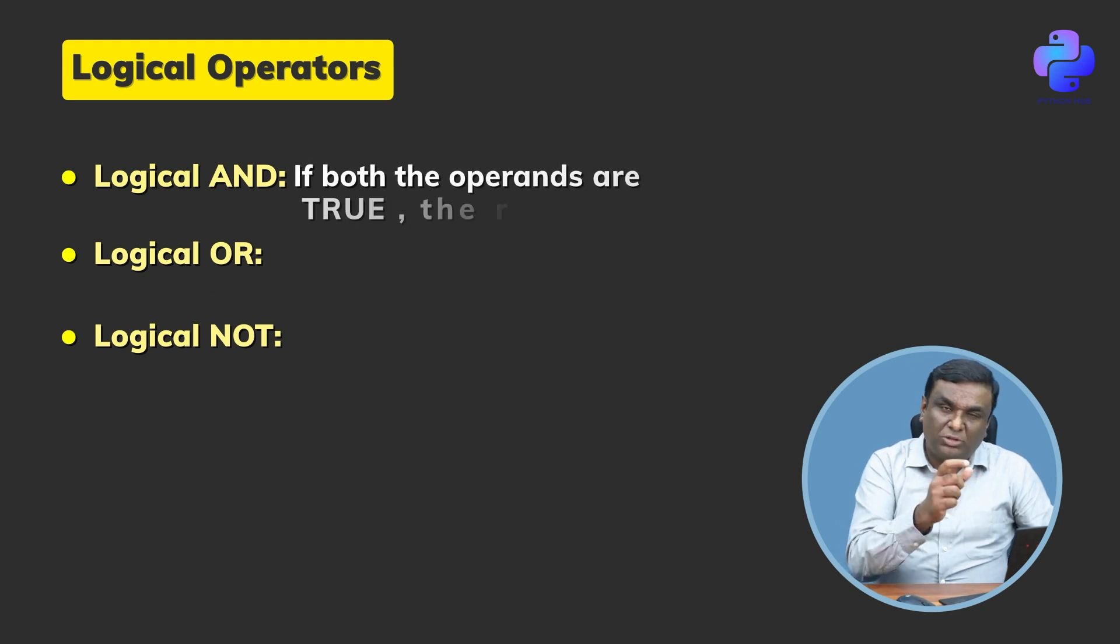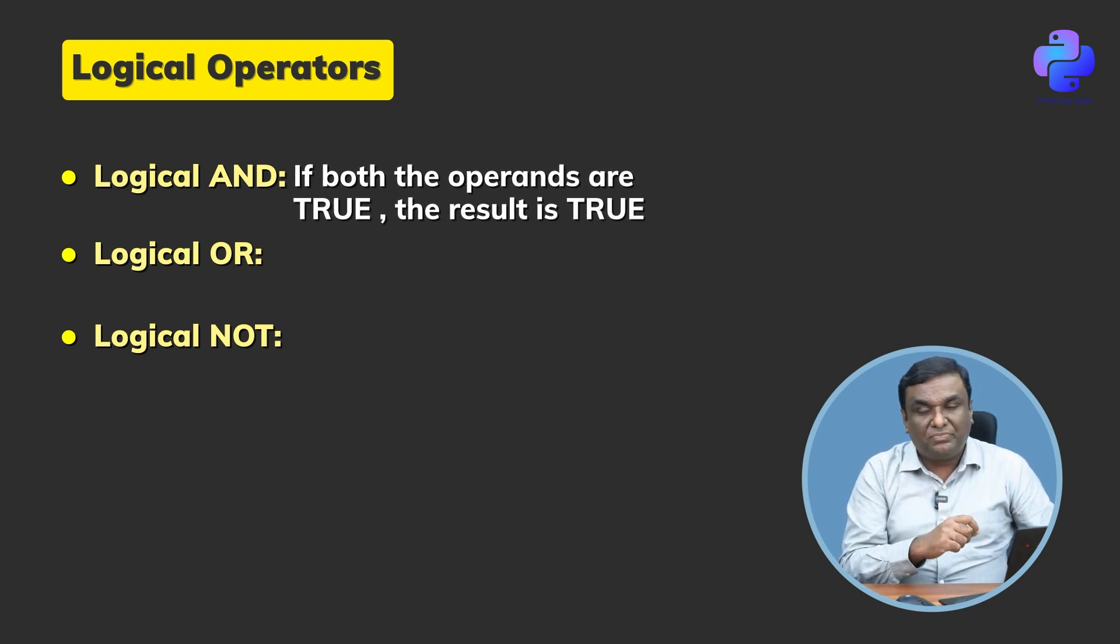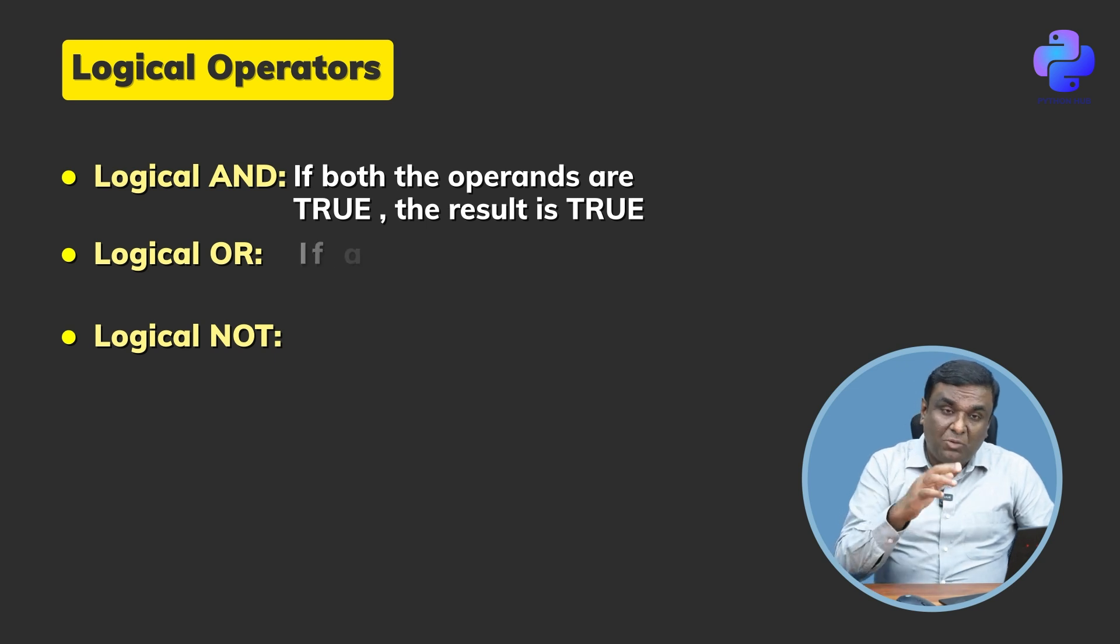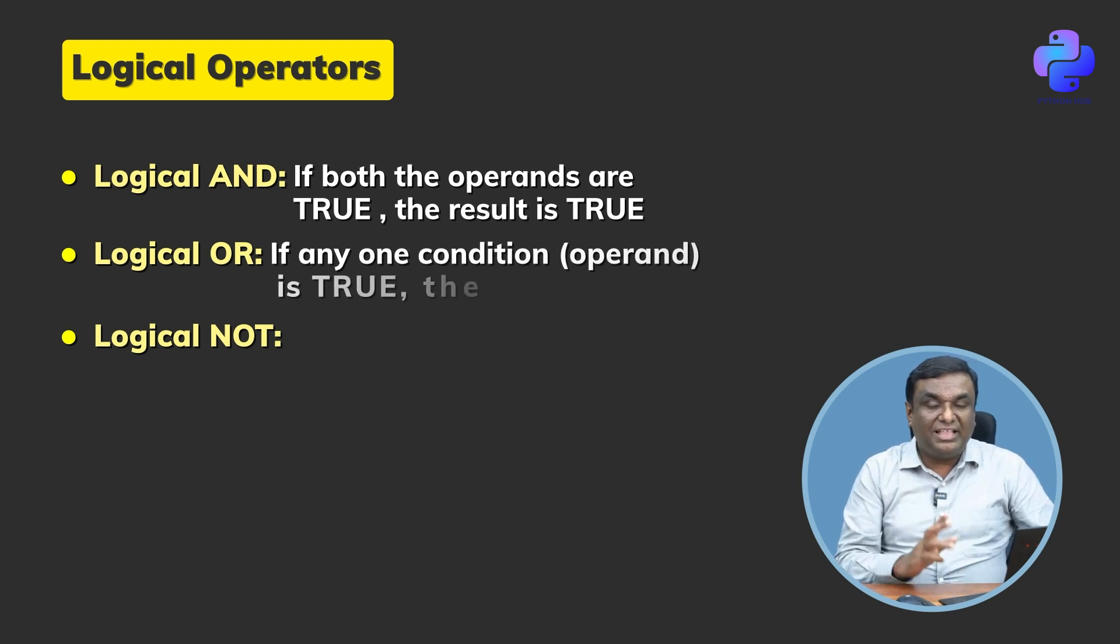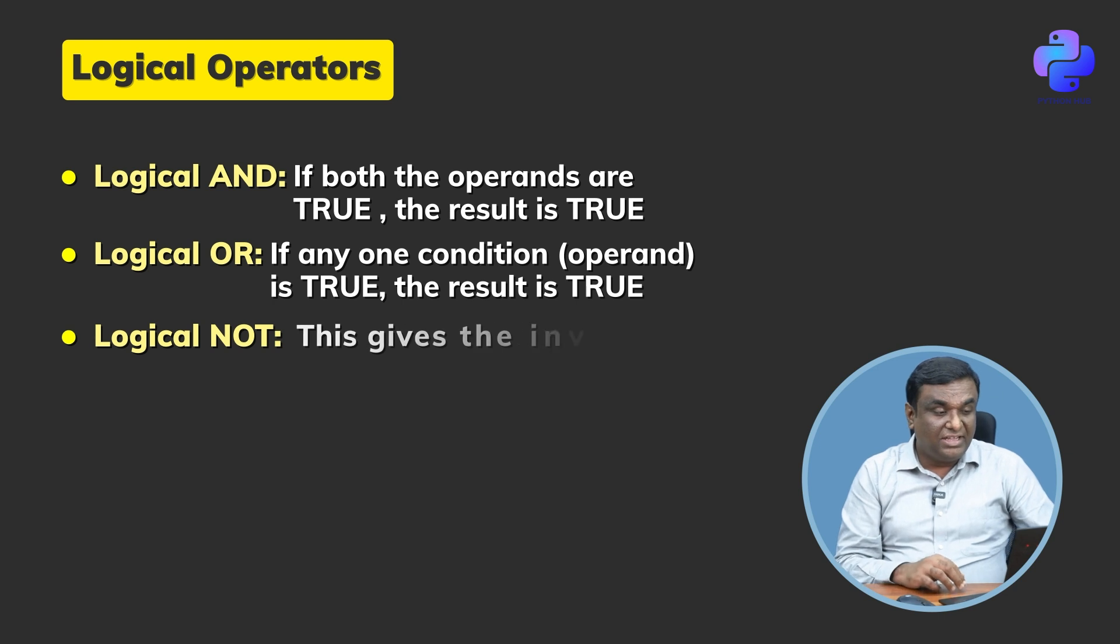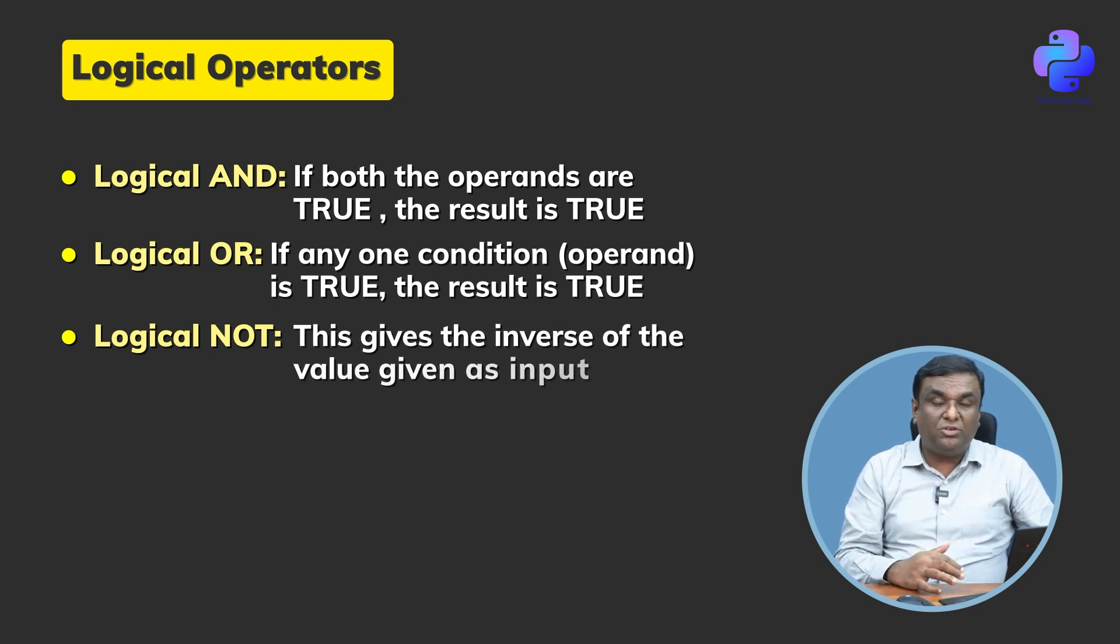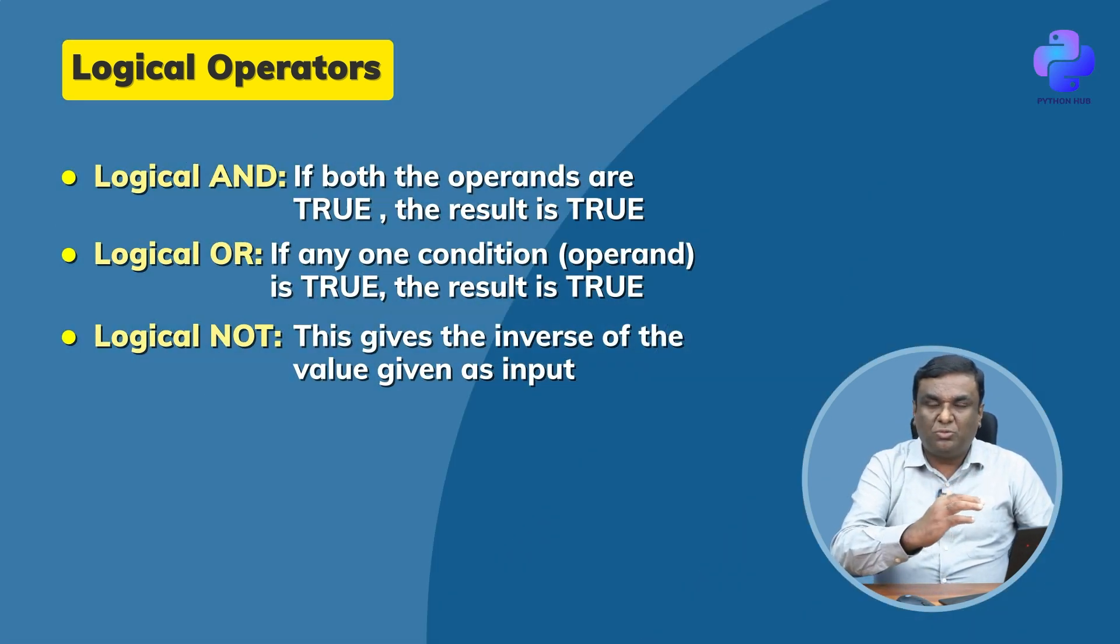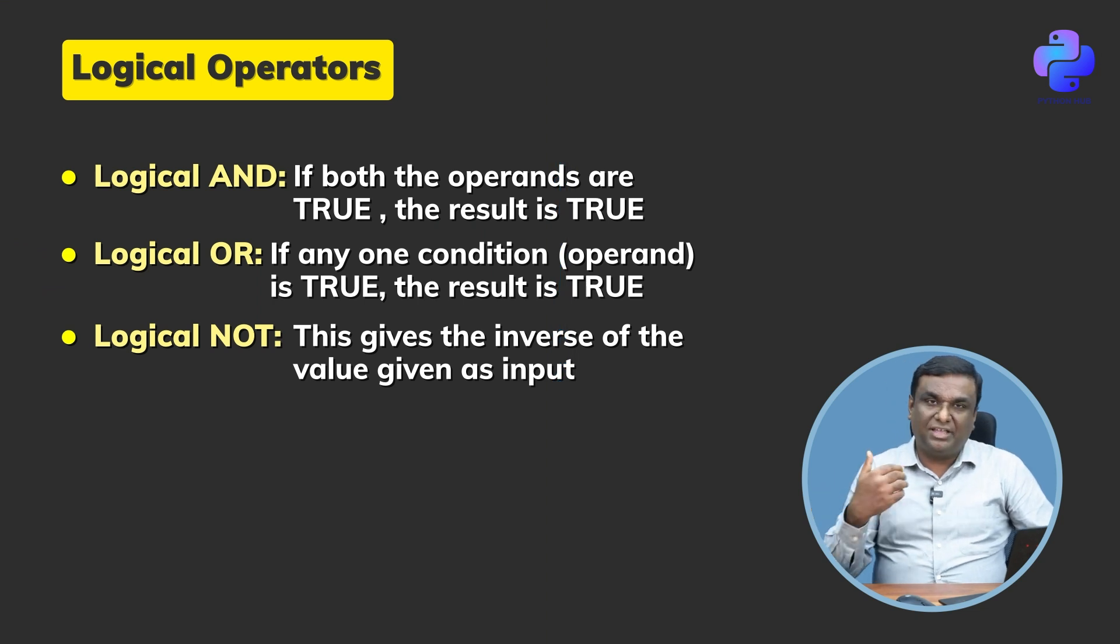Logical AND: if both the operands are true, the result is true. Logical OR: if any one condition is true, then the result will be true. AND means both the conditions should be met, OR means even if one of the conditions are met you will be able to perform that operation. Logical NOT gives the inverse of the value given as input. If it is true, the outcome is false. If it is false, the outcome is true.